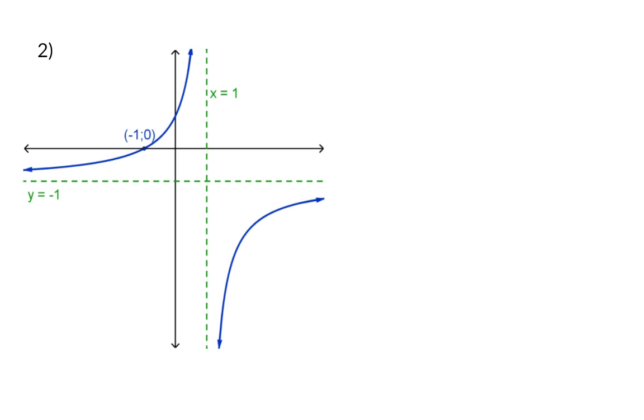In example 2, both asymptotes are now given. Firstly, we have the vertical asymptote at x is equal to 1, which means that the p value is minus 1, and then we have the horizontal asymptote at y is equal to minus 1, which gives us a q value of minus 1.